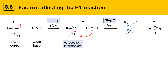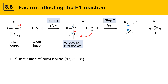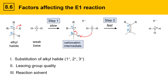There are a number of factors that influence the E1 reaction. The first is the substitution of the alkyl halide substrate — is it primary, secondary, or tertiary? The big question is what are the R groups: are they hydrogens or carbon groups? That influences the rate of the reaction. There's also leaving group quality — how good of a leaving group is X? Then there's reaction solvent — what solvent are the reactants dissolved in?